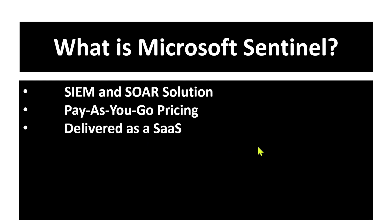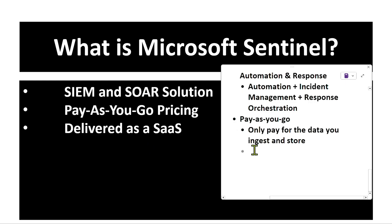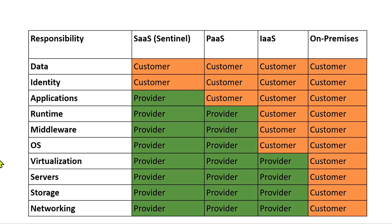Microsoft Sentinel is a fully cloud-native solution delivered as a Software as a Service (SaaS) solution. This means you don't have to worry about maintaining infrastructure, deploying hardware, or managing updates — it is all handled by Microsoft. There are different service models like SaaS, PaaS, and IaaS, as well as on-premises, and Sentinel is SaaS.